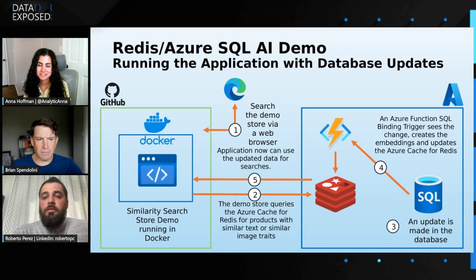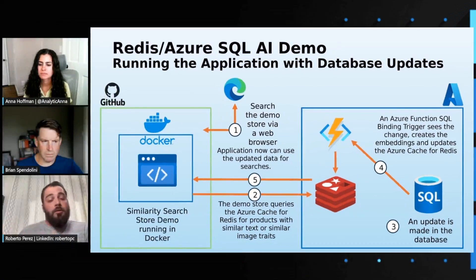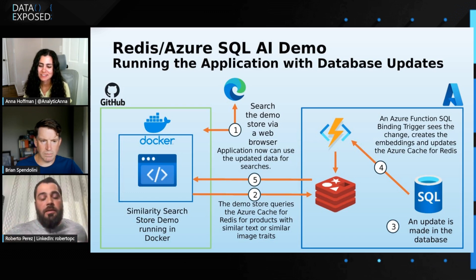There are different components. The application is a React application with a FastAPI backend. It's running on a Docker container. We also have the Redis component — a Redis cluster, or Redis cache. We're using Azure Cache for Redis Enterprise. We have an Azure Function that is going to run every time we have a SQL trigger. Every time there's an update on the Azure SQL database, it's going to trigger to preload or update the information in the vector database. This is a pretty common scenario where applications or teams already using SQL want to leverage AI in their systems and tackle those solutions with Redis Enterprise as the real-time data platform.